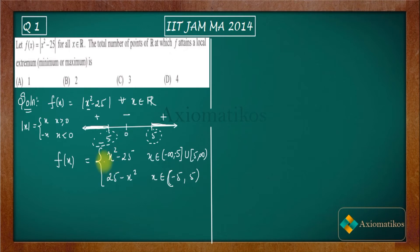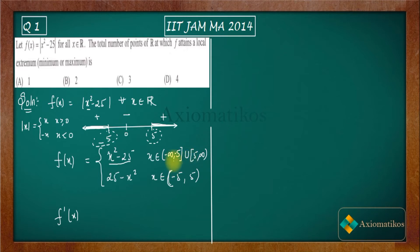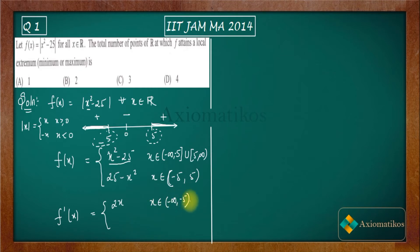That means we must apply the first derivative test to check for extrema. The function is differentiable on (-∞, -5) and on (5, ∞), where f'(x) = 2x. On (-5, 5), f'(x) = -2x. We note the problem points at x = -5 and x = 5 separately.